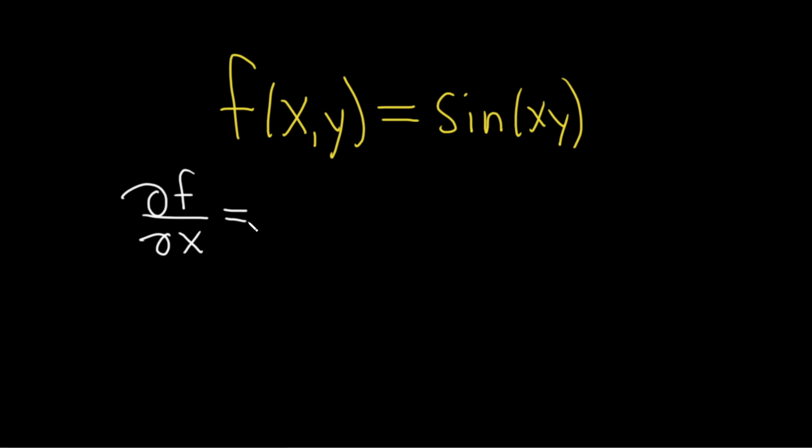We're basically finding the derivative of the sine of a constant times x. We have to use the chain rule. The chain rule says that we take the derivative of the outside function, which in this case is sine, and its derivative is cosine.